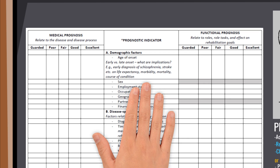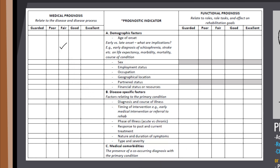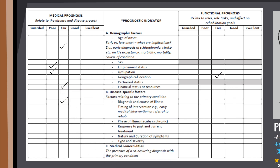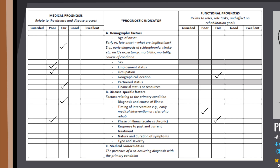Prognosis is judged by tabulating all the different factors that may influence it and creating a tick list of whether each is a poor, fair, good, excellent, or guarded prognostic indicator. This table gives students an idea of what factors to look out for and what information to gather from the background information, but is not a collectively exhaustive list. Students can choose which factors are relevant for their clients.